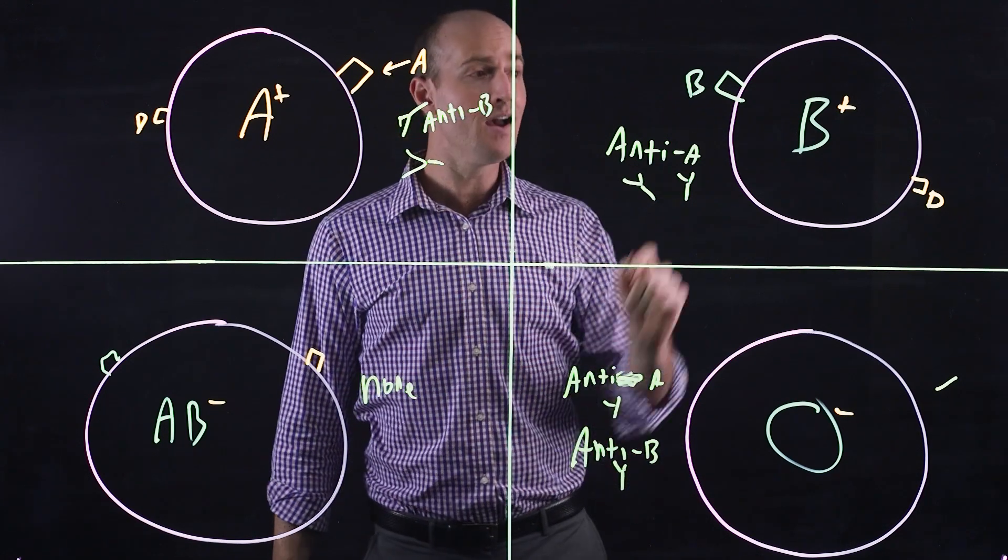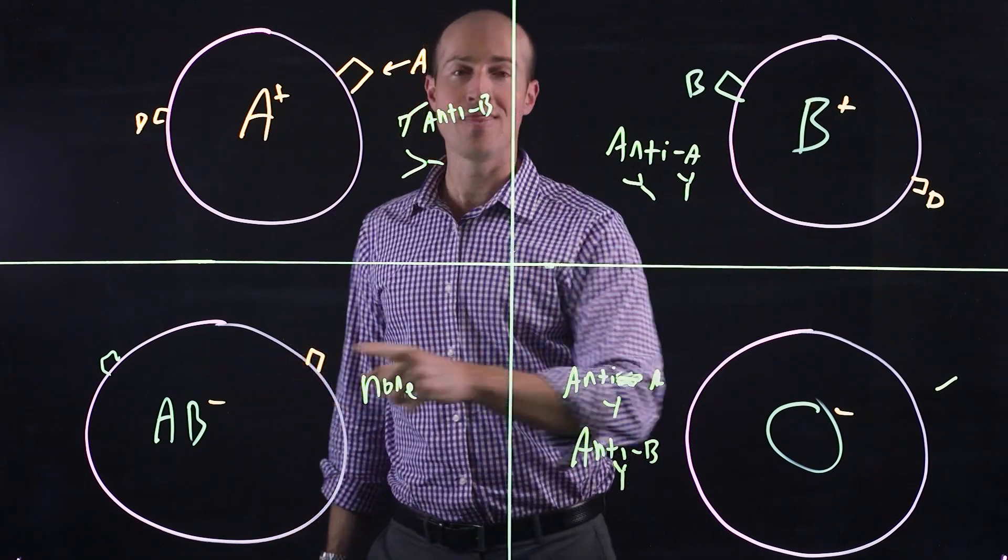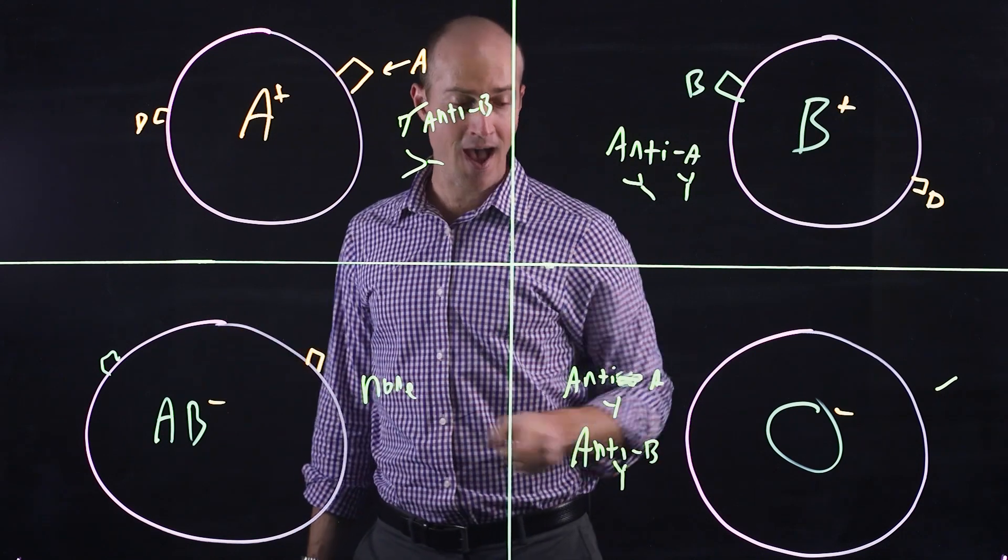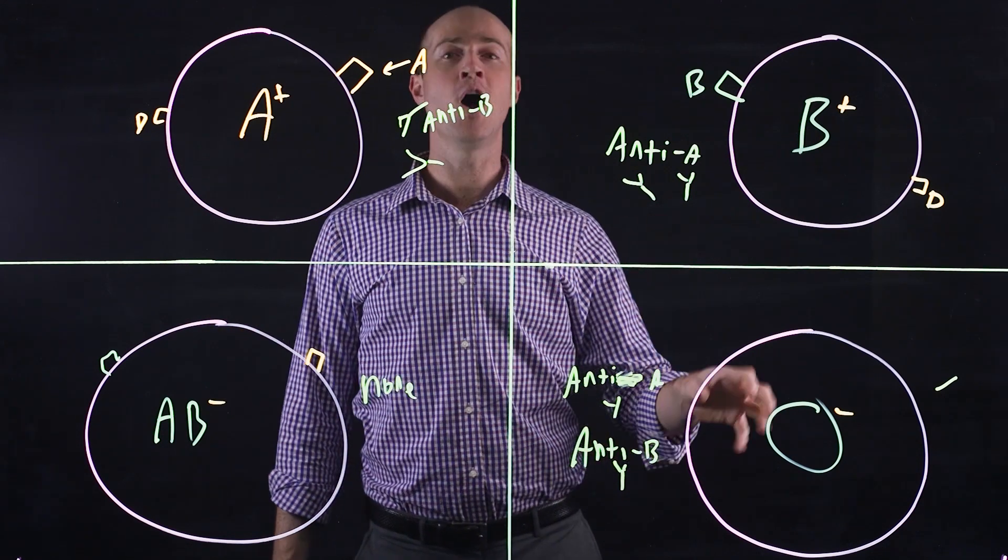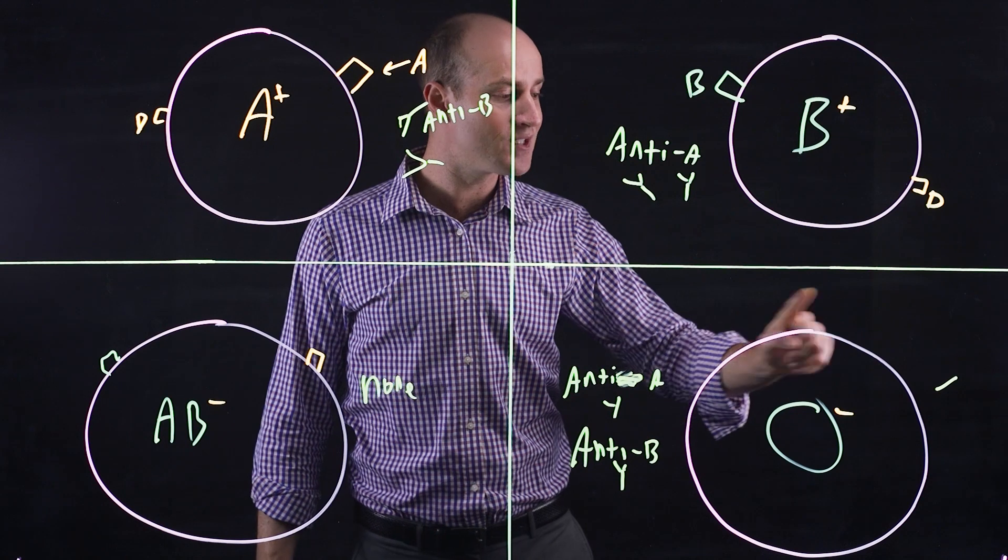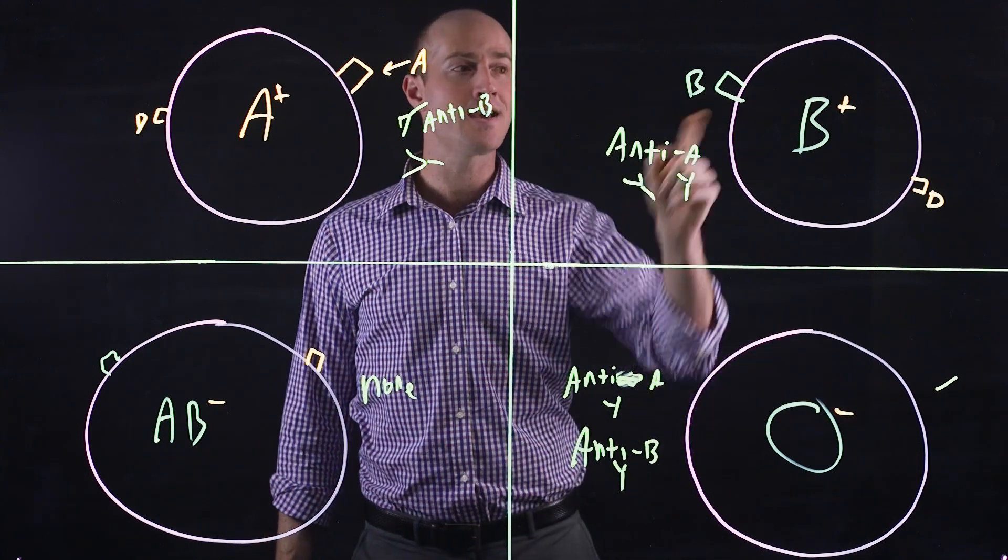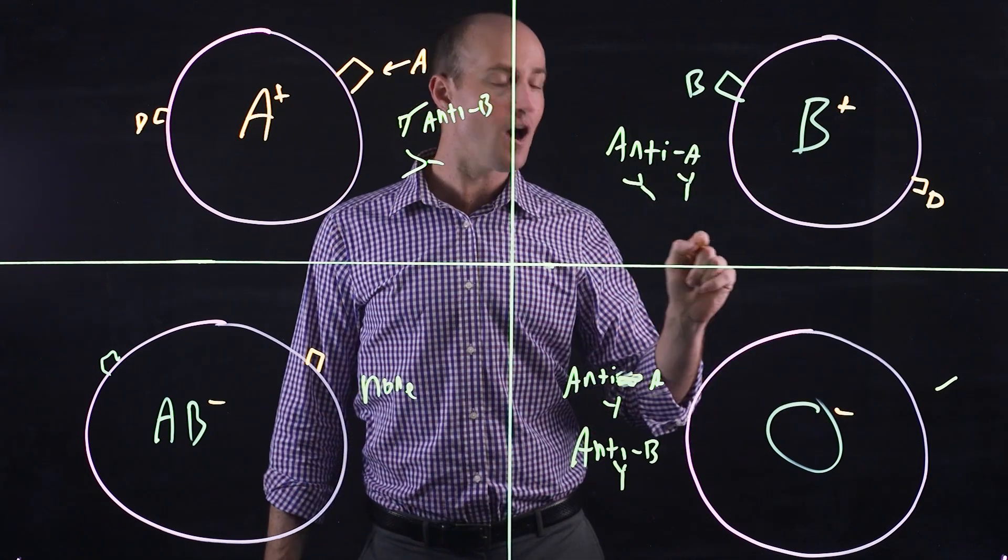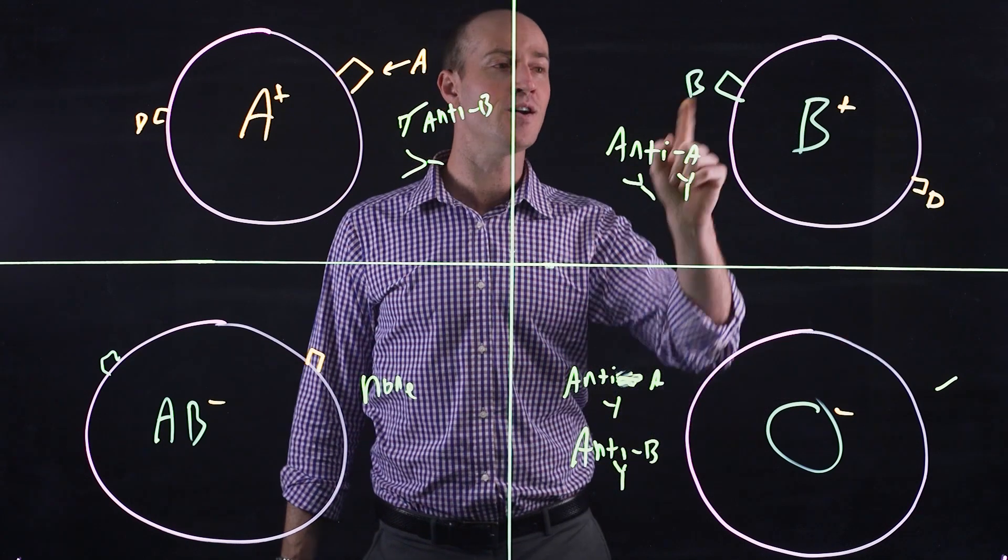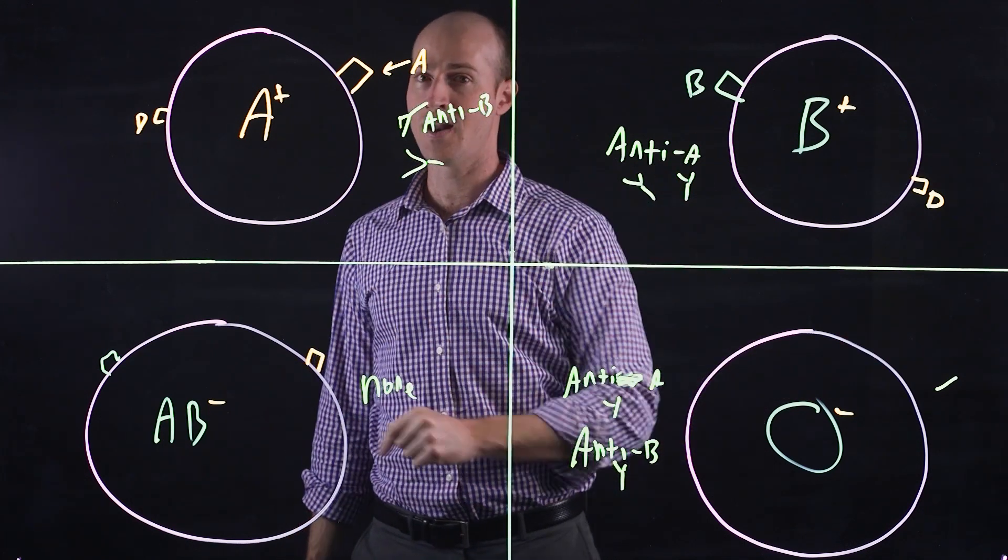O cannot accept A. O cannot accept B. O cannot accept AB because these have A and B that will react. However, O is used as a universal donor. Because it has no A or B, it can go to any of these, it won't react. O negative is fantastic because it also doesn't have the rhesus. O negative can go to anyone.